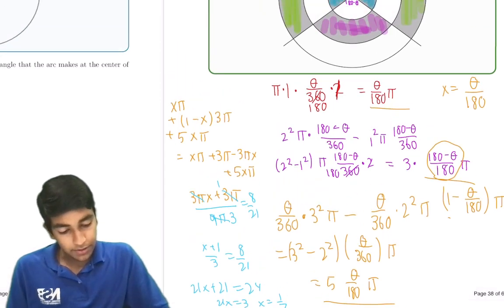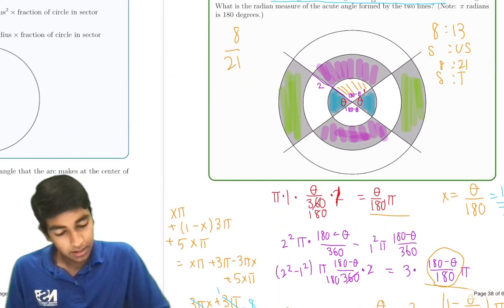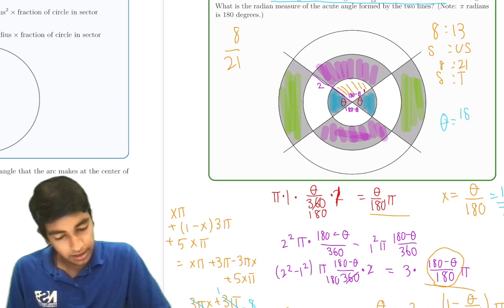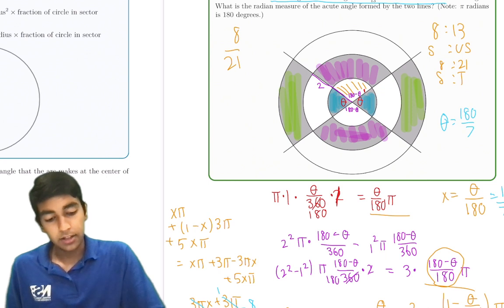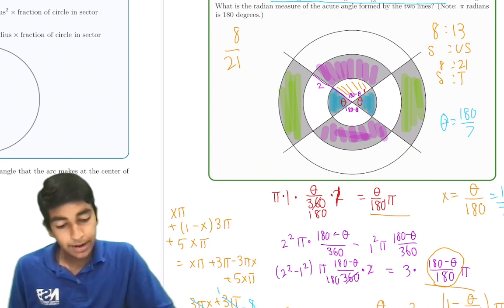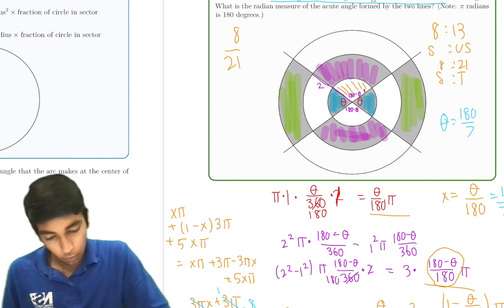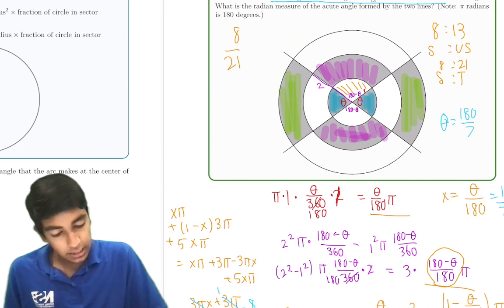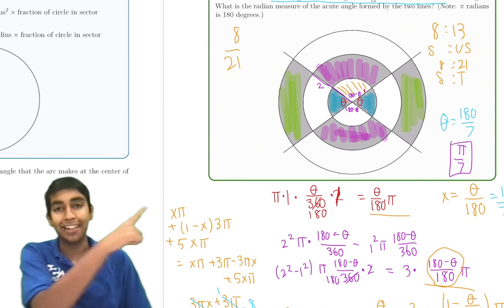So x = 1/7, meaning θ/180 = 1/7, so θ = 180/7 degrees. Since π radians equals 180 degrees, 180/7 degrees is just π/7 radians. So π/7 is the answer.